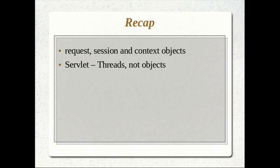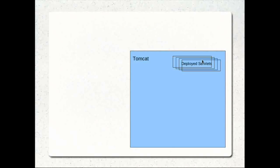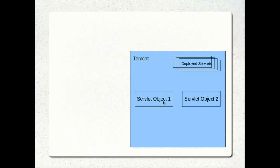This actually has an important implication. When you make a request by typing in a URL and pressing go, we know a thread is created and doGet or doPost executes. But something actually happens before that. In the Tomcat container with deployed servlets — which are simply .class files — somewhere along the way these servlets are actually instantiated and servlet objects are created. This depends on the server itself and the configuration, but Tomcat instantiates and creates these servlet objects.